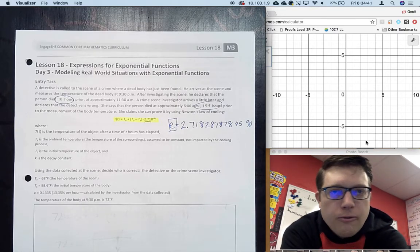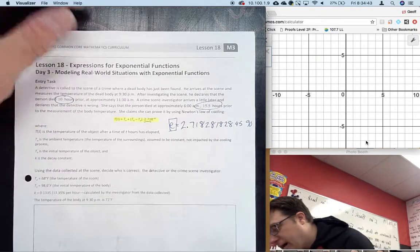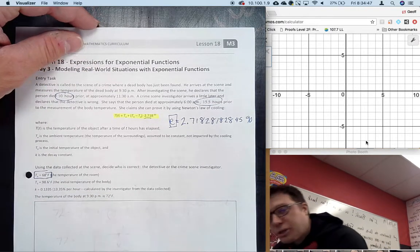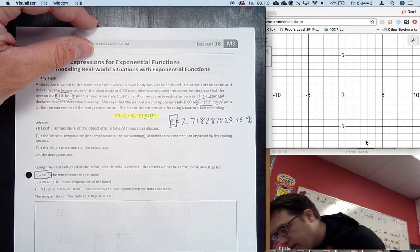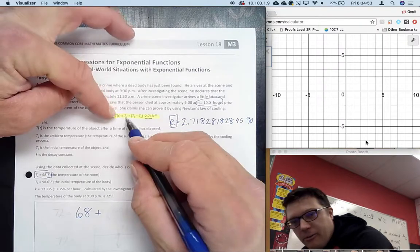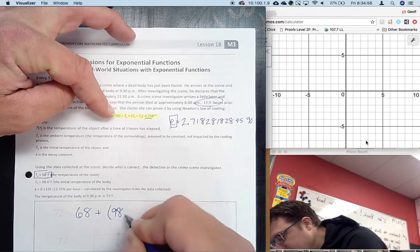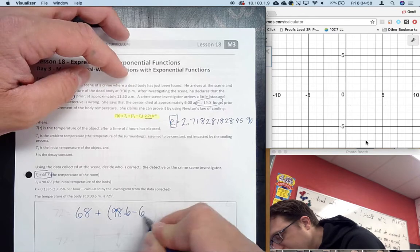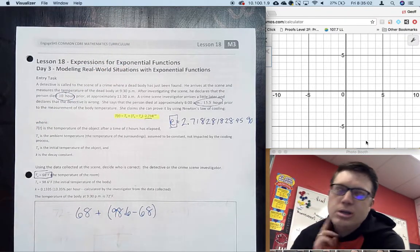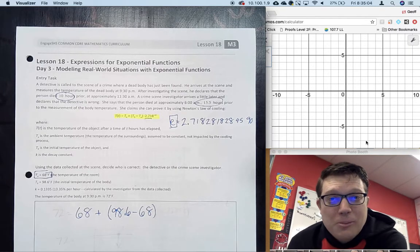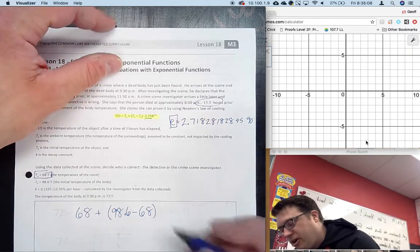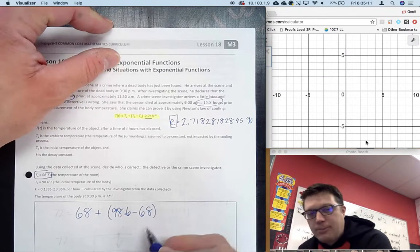We have that T_a, the temperature of the room, is 68 degrees. Then we're going to add to that 98.6 degrees, take away 68 degrees. So that's the person's body temperature - a standard average temperature of 98.6 degrees Fahrenheit.